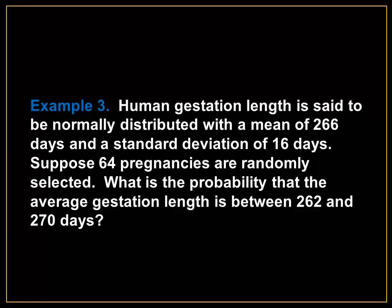Human gestation length is said to be normally distributed with a mean of 266 days and a standard deviation of 16 days. Suppose 64 pregnancies are randomly selected. What is the probability that the average gestation length is between 262 and 270 days?